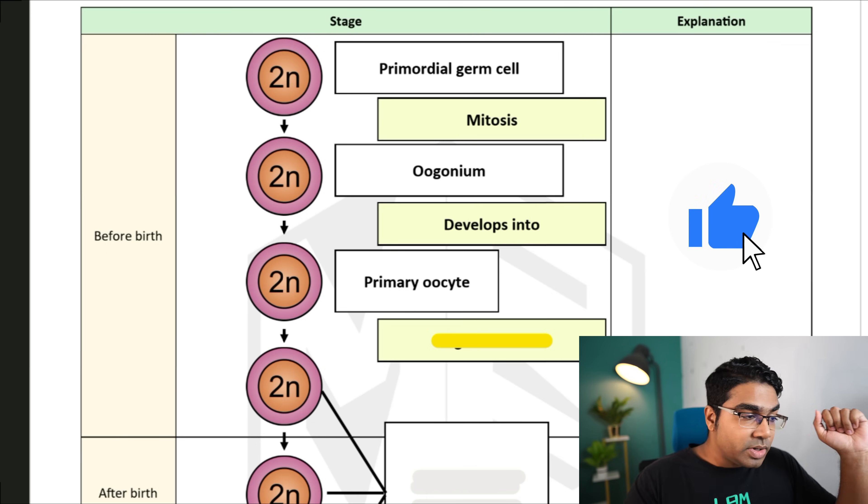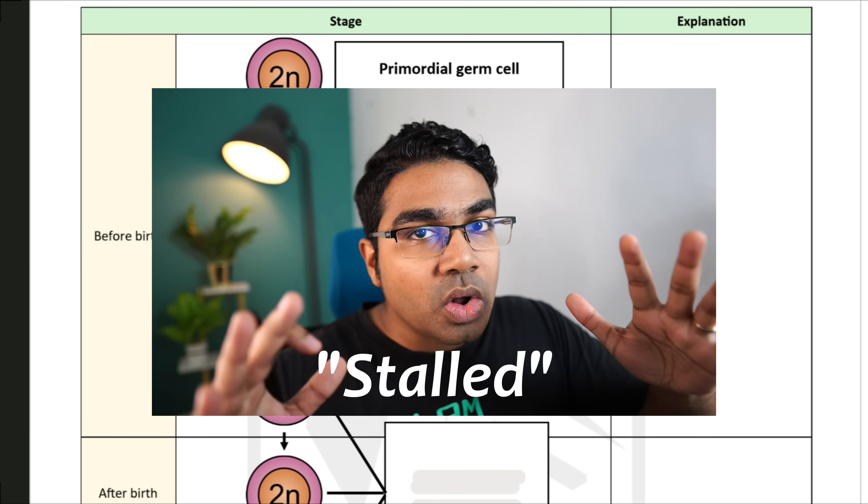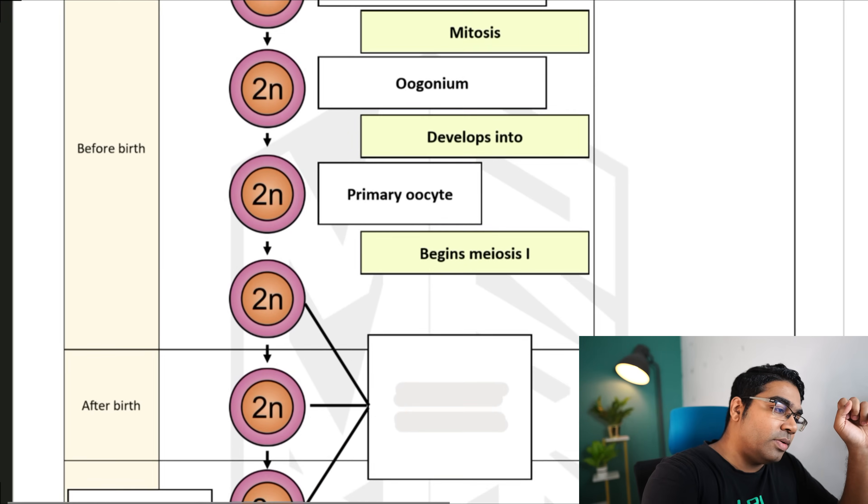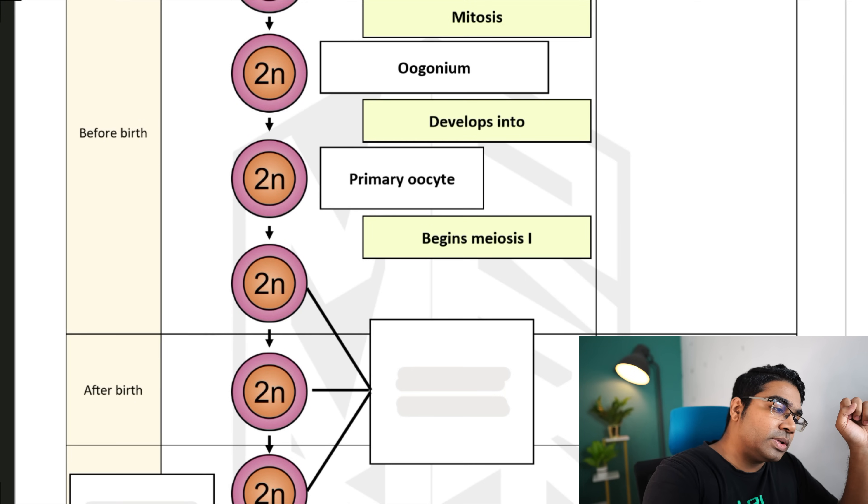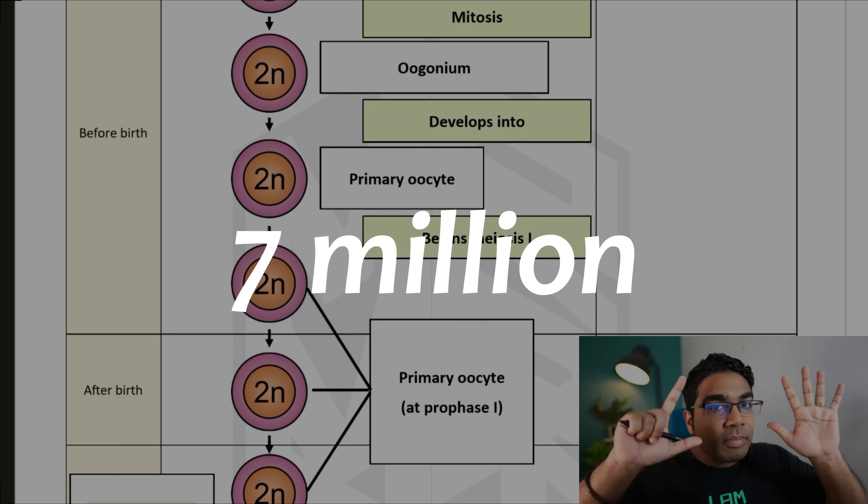The primary oocyte will begin meiosis 1. However, meiosis 1 will be stalled or will be stuck at prophase 1. So the primary oocyte will stop at prophase 1. During the fetal development, about 7 million primary oocytes are produced.